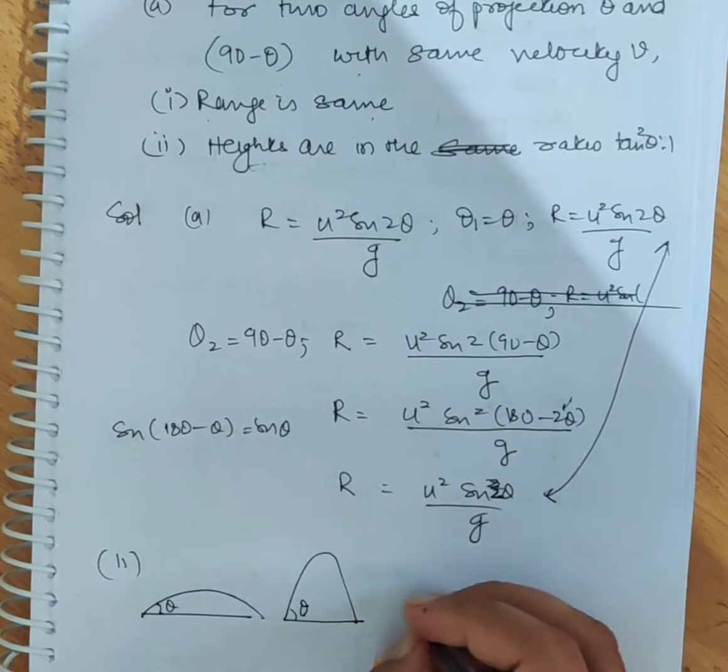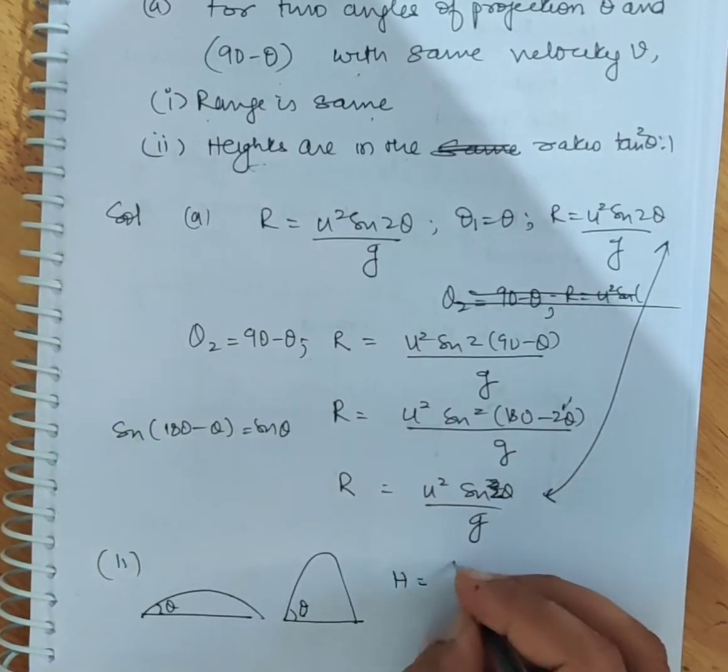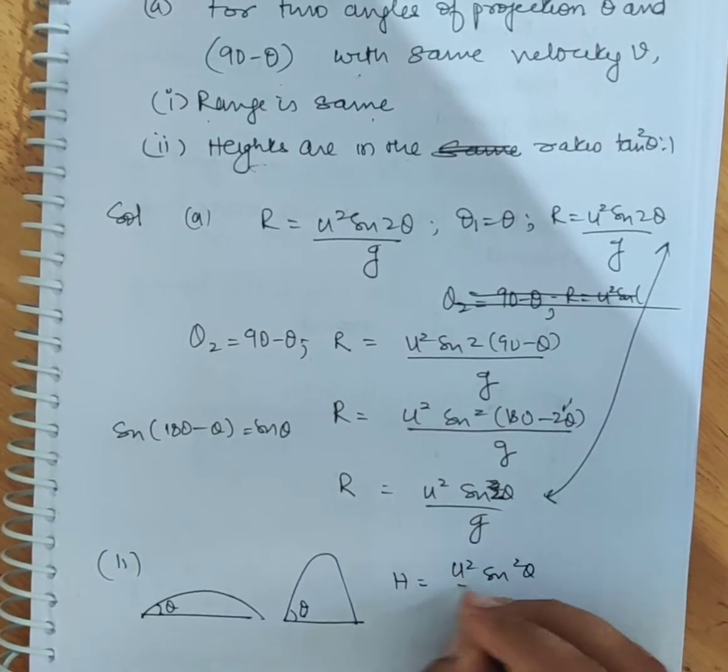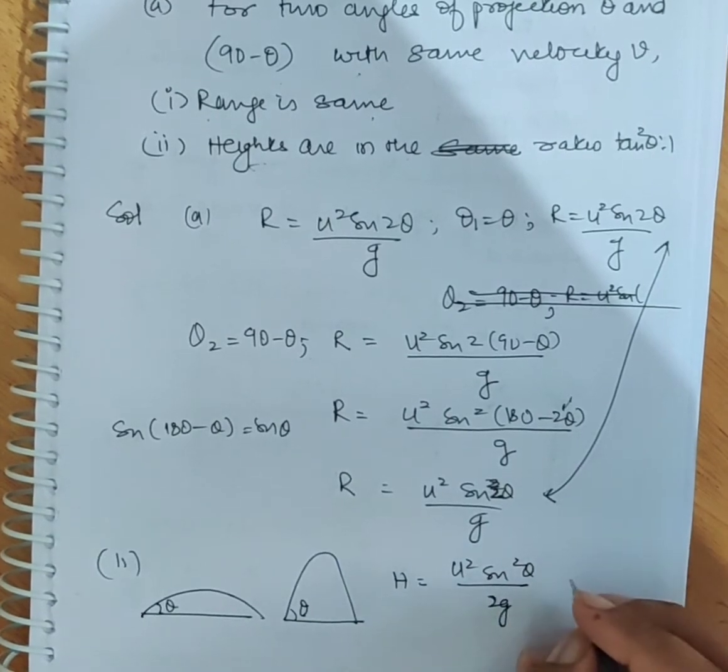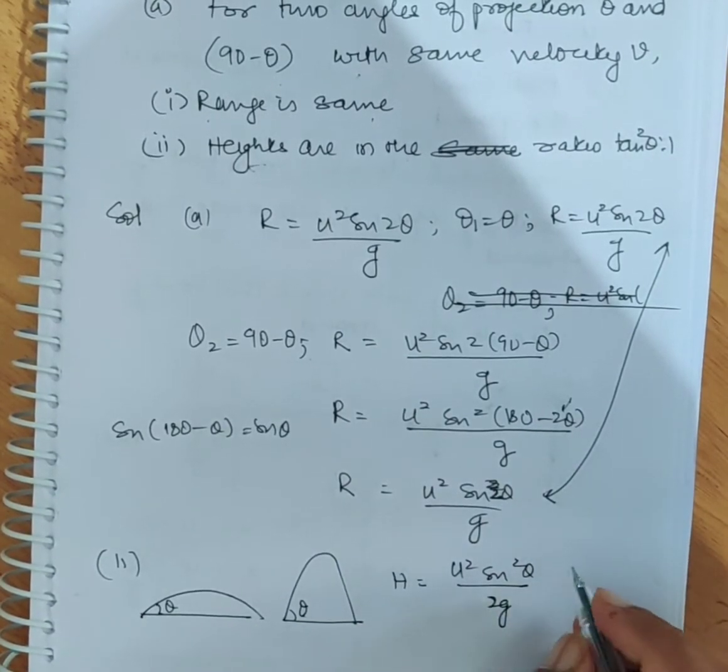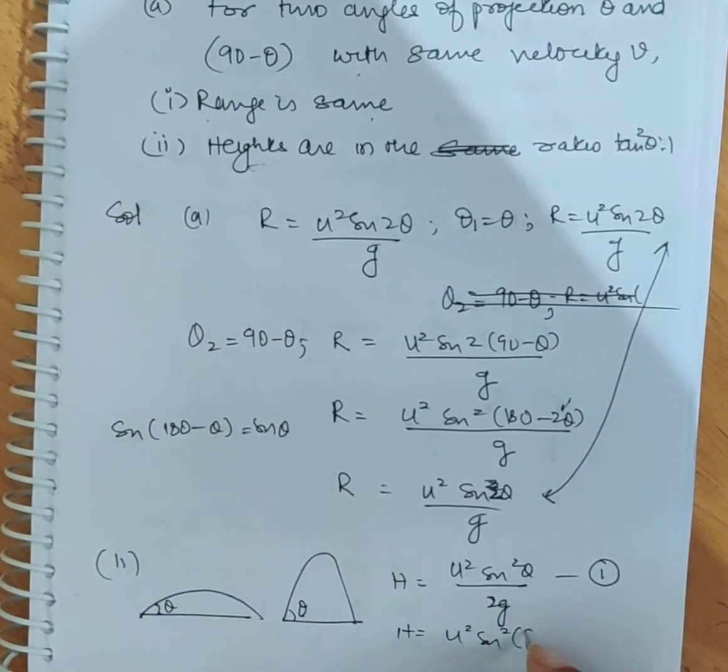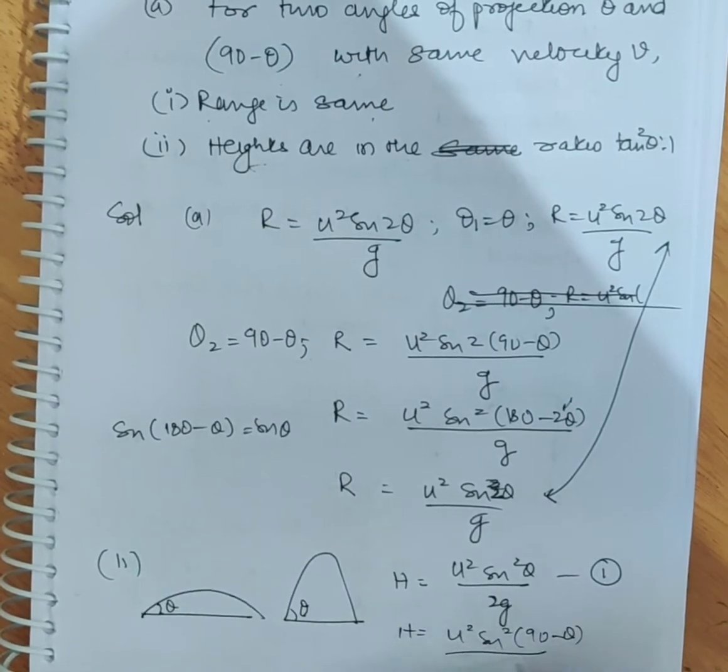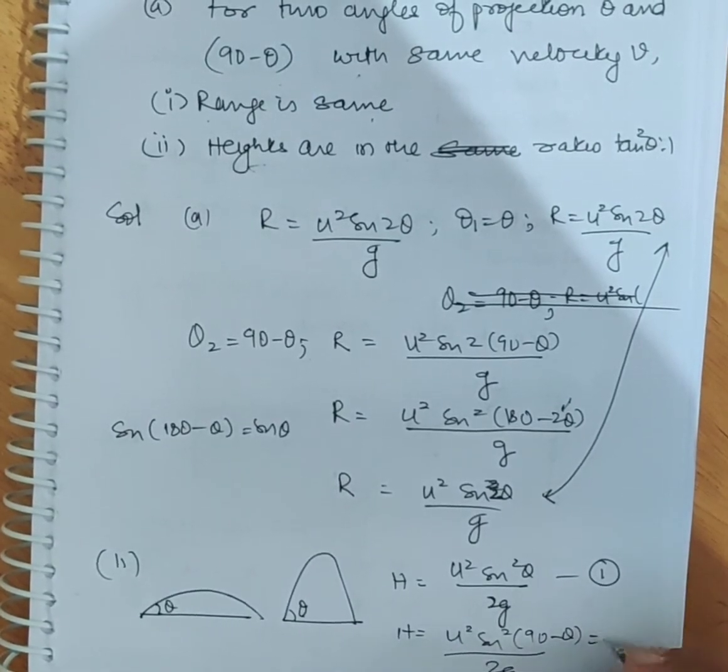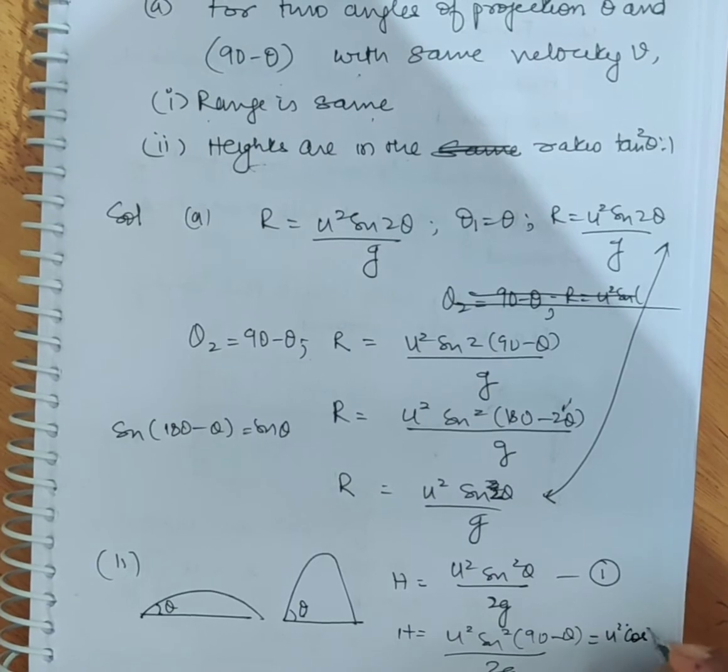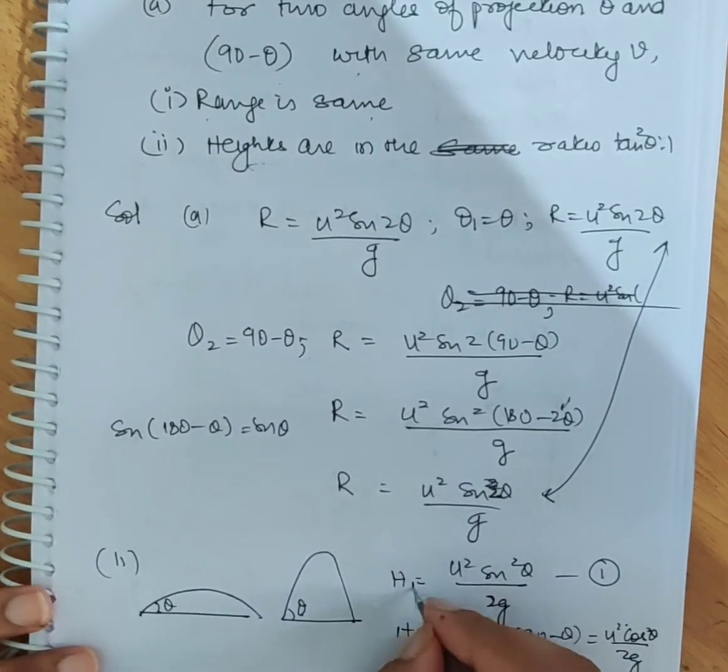What was the height formula? u²sin²θ by 2g. This is our first expression u²sin²θ by 2g. These are h1 and h2.